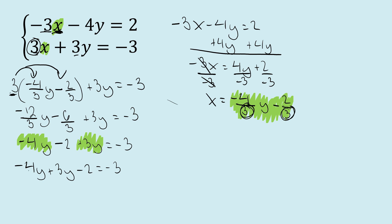Negative 4y plus 3y minus 2 equals negative 3. Negative 4y plus 3y is negative 1y minus 2 equals negative 3. Let's add the 2. So I'm going to get negative 1y equals negative 1. Let's divide by negative 1, and we get y equals 1. So our value for y is 1.